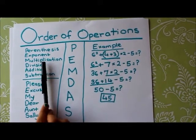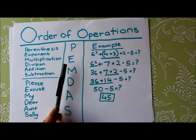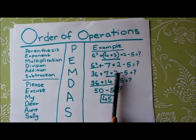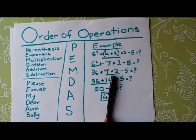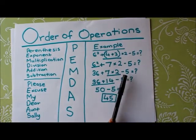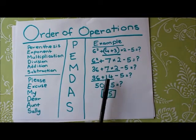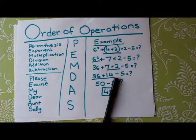Next I look, and multiplication is the next operation, so I look for any multiplication, and there's 7 times 2. So I do 36 plus 7 times 2 minus 5, and 7 times 2 is 14, so it will be 36 plus 14 minus 5.